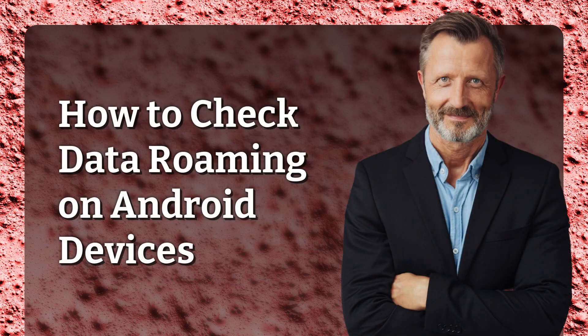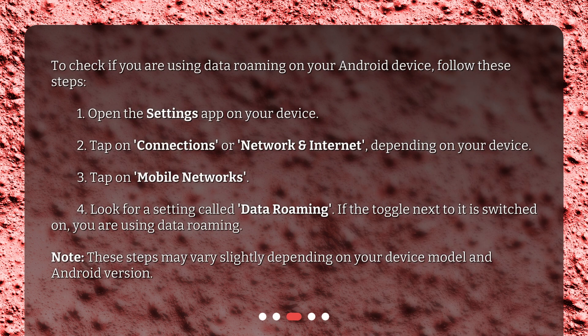How to check data roaming on Android devices? To check if you are using data roaming on your Android device, follow these steps. 1. Open the Settings app on your device. 2. Tap on Connections or Network and Internet, depending on your device. 3. Tap on Mobile Networks. 4. Look for a setting called Data Roaming. If the toggle next to it is switched on, you are using data roaming. Note: these steps may vary slightly depending on your device model and Android version.